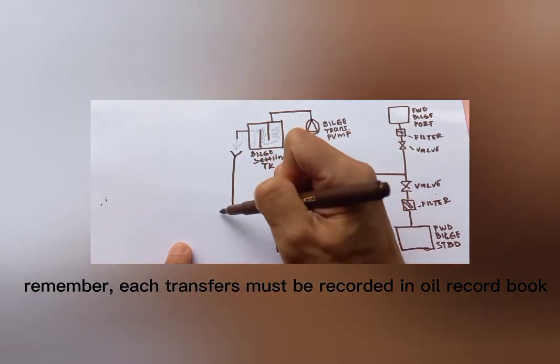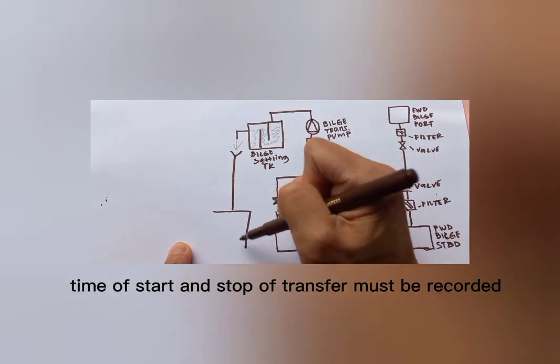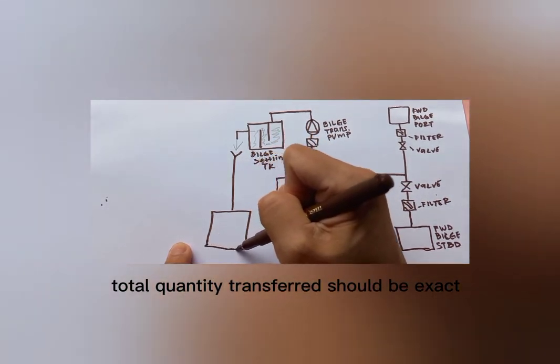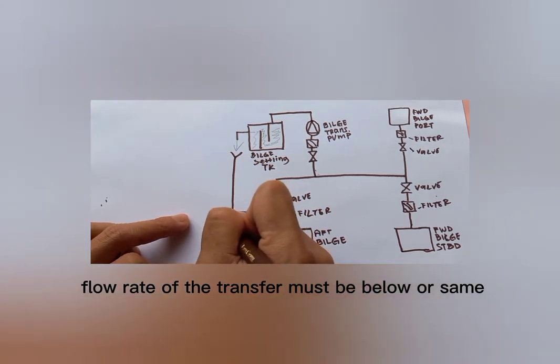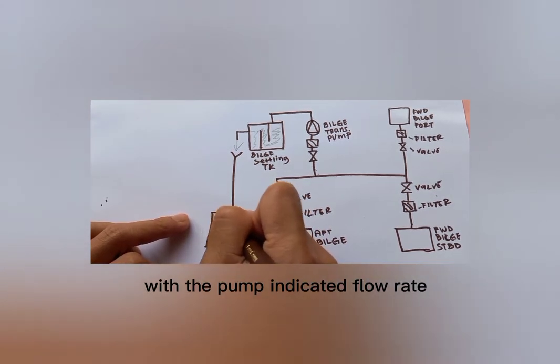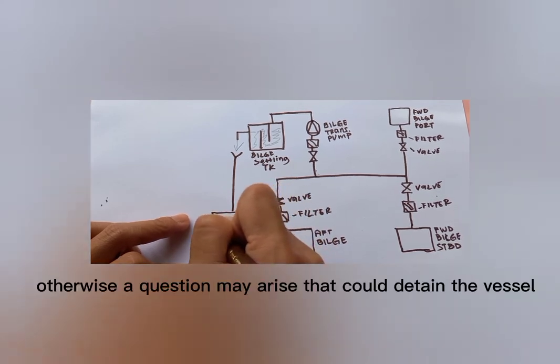Remember, each transfer must be recorded in oil record book. Time of start and stop of transfer must be recorded. Total quantity transferred should be exact. Flow rate of the transfer must be below or same with the pump indicated flow rate, otherwise a question may arise that could detain the vessel and pay some fines during inspections.